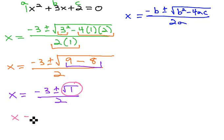The square root of 1 is simply 1, and so we have x equals negative 3, plus or minus 1, all over 2.